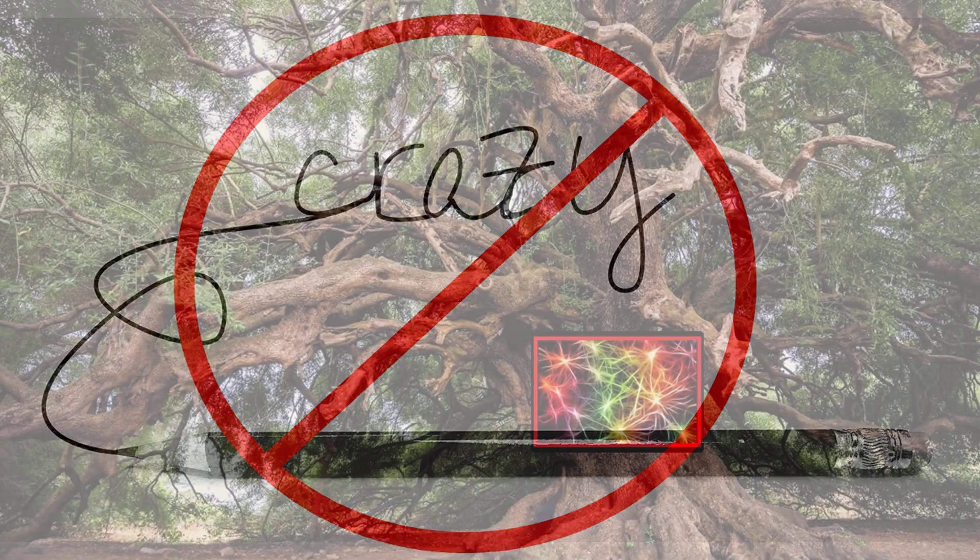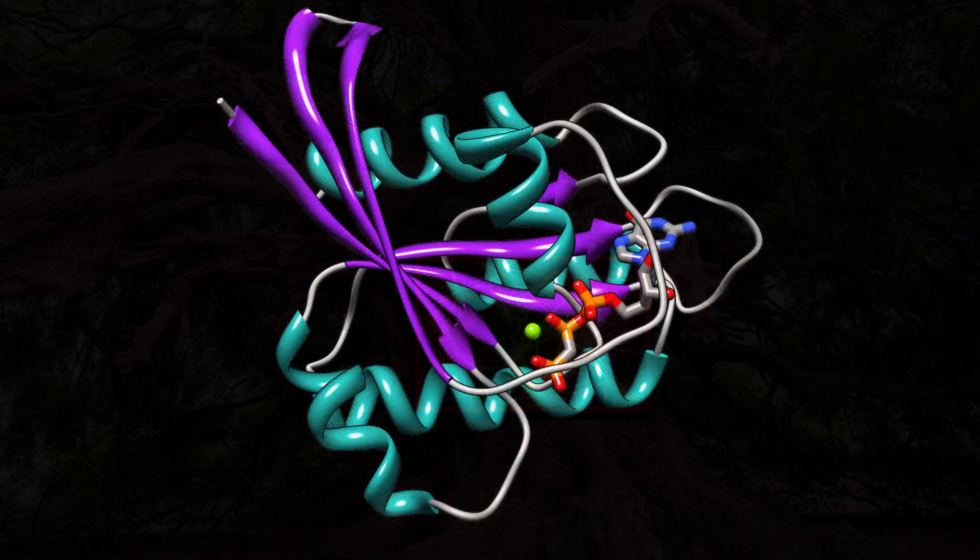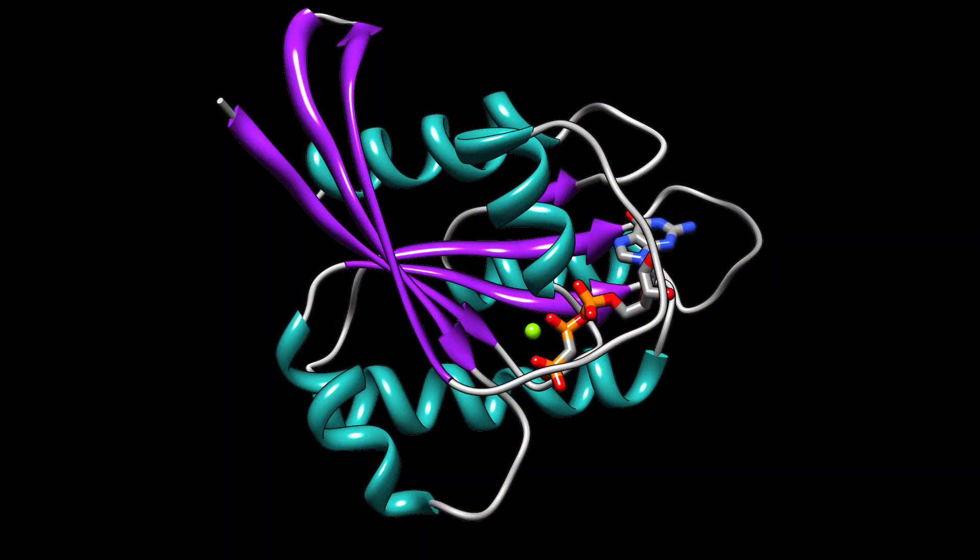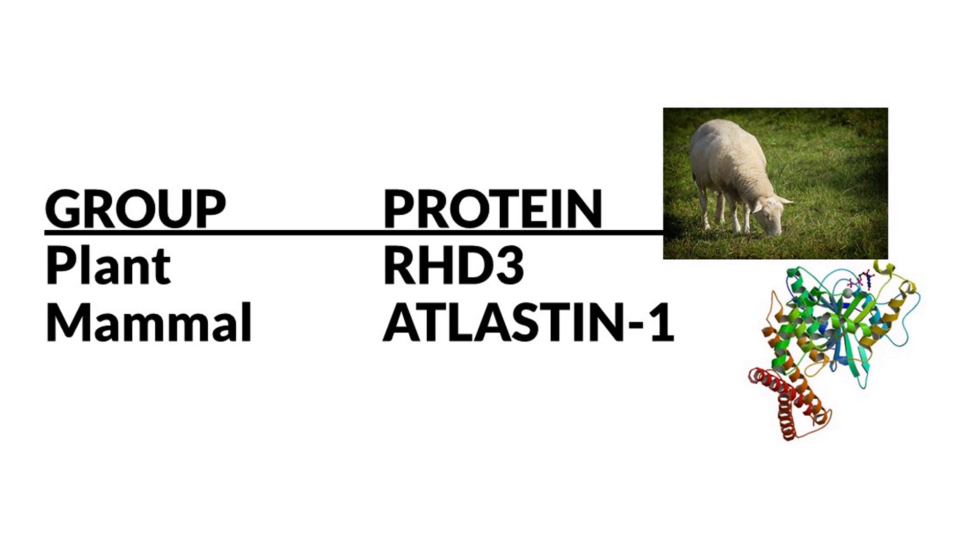Now, plants obviously don't have nervous systems, but there are proteins in plants that look structurally similar to proteins that we see in the nervous system of mammals. So one of those plant proteins behaving as a prion could maybe have an effect on the mammal that eats it, affecting their proteins.